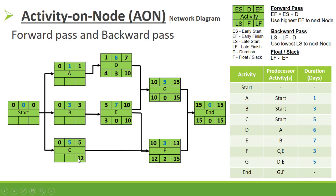For activity C: late finish = 12, float = 12 - 5 = 7, late start = 12 - 5 = 7. For activity B: late finish = 3, float = 3 - 3 = 0, late start = 3 - 3 = 0. For activity A: late finish = 4, float = 4 - 1 = 3, late start = 4 - 1 = 3.